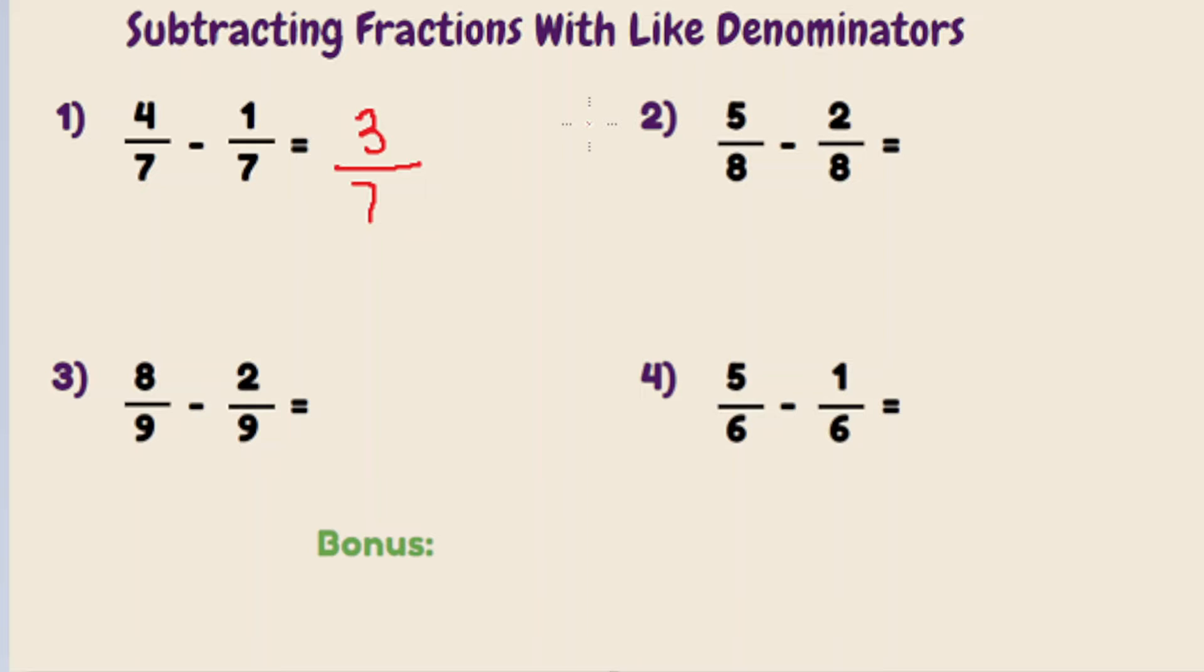Now in order to simplify this, we'd have to find a common factor between 3 and 7. And the only factors of 3 and 7 are 1 and 3 and 1 and 7. So this one is in its lowest form already. If you'd like some help on simplifying fractions, I have a video I've created. I'll leave a link to that video in the description below.